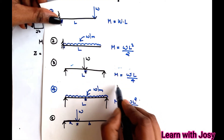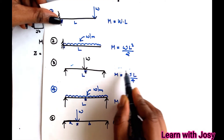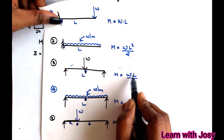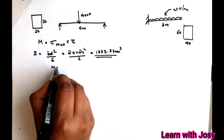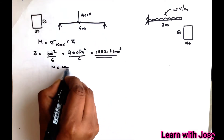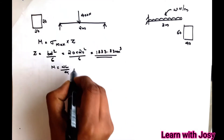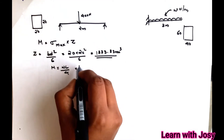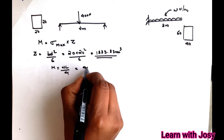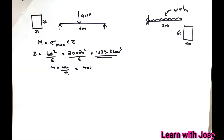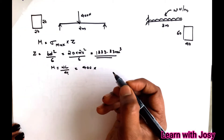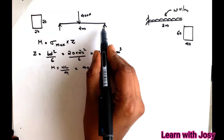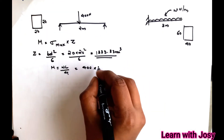The maximum bending moment equation for a simply supported beam with a central point load is M = WL/4. W is 400 N and L is 2 meters. So M = 400 × 2000 / 4.